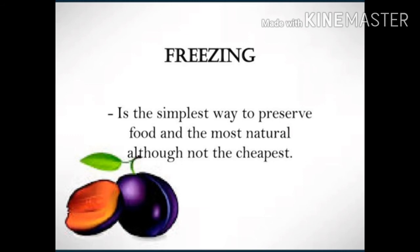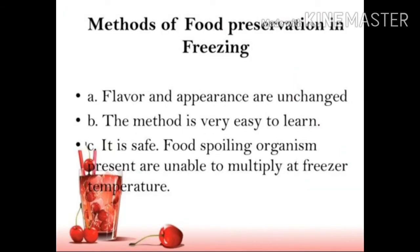The first method of food preservation is freezing. It is the simplest way to preserve food and the most natural, although not the cheapest. Freezing is a food preservation method in which food substances are kept at extremely low temperatures. Microorganisms such as bacteria and fungi cannot survive at extremely low temperatures. So by keeping food at low temperature, bacteria or fungi cannot develop, and our food is saved from spoiling.